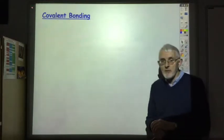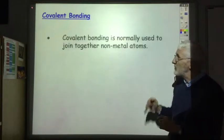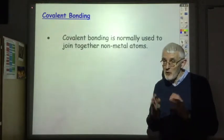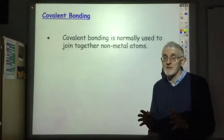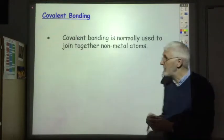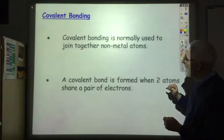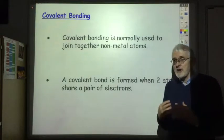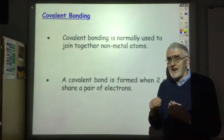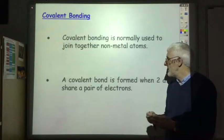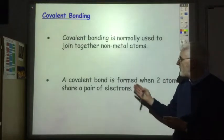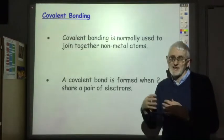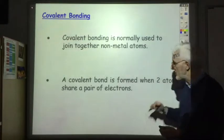Covalent bonding is usually used to join together non-metals. If there are only non-metal atoms in your compound, it is likely to be covalent. Whereas ionic bonding involves the gaining and losing of electrons, a covalent bond is formed when two atoms share a pair of electrons - a slightly different way of achieving a full outer shell.